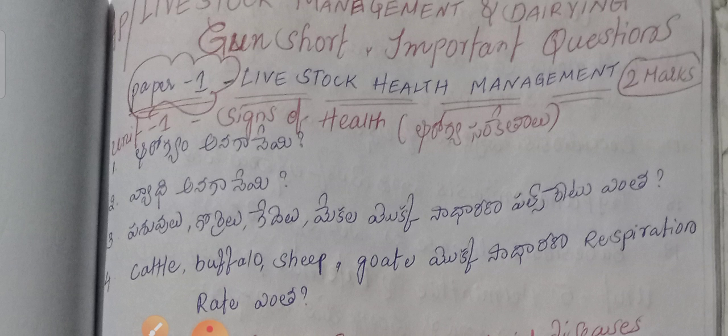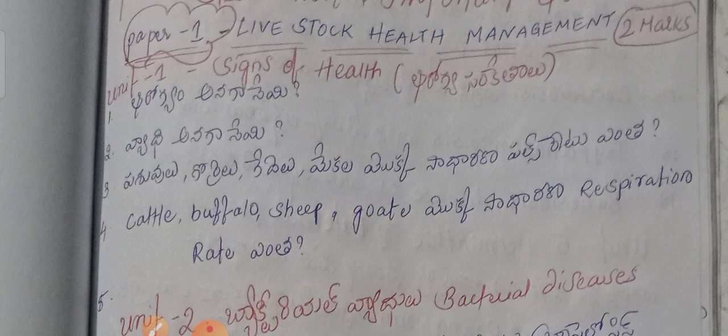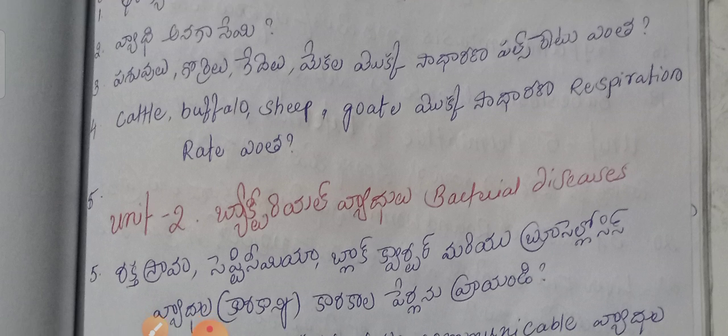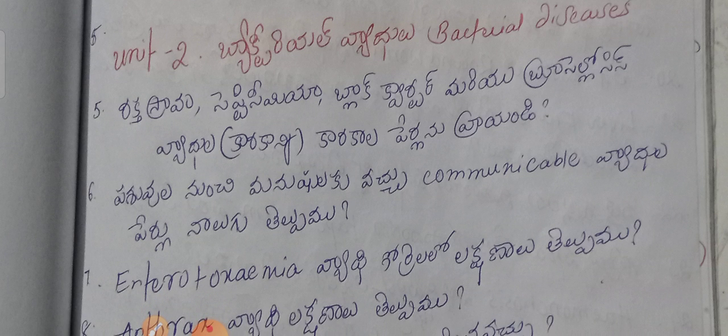Unit 1 is Science of Health. Questions include: what is health, what is disease, and what are the normal physiological parameters such as pulse rate, respiration rate for cattle, buffalo, sheep, and goat. Unit 2 covers Bacterial Diseases, including Haemorrhagic Septicaemia, Blackwater, and Brucellosis.